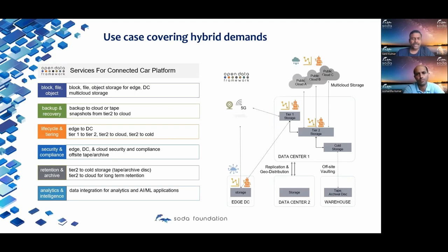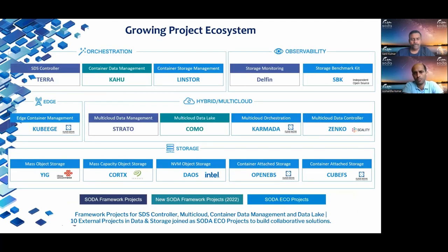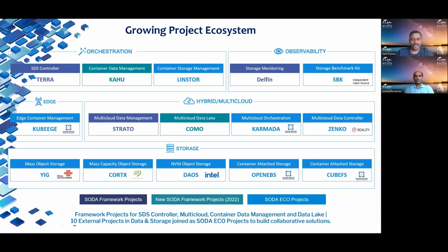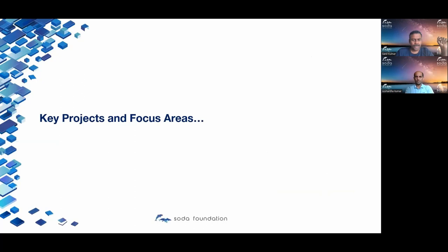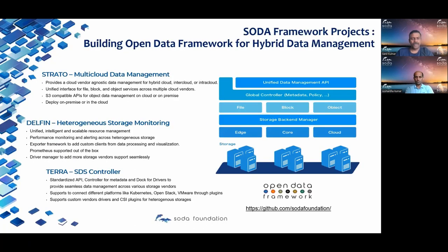We try to cover hybrid data management demands across edge, data center, and multiple clouds. Our project landscape includes framework projects like Kahu and Como, existing projects like Terra, Strato, and Delphin, and external echo projects. Key existing projects: Strato for multi-cloud data management, Delphin for heterogeneous storage monitoring, and Terra as an SDS controller for storage orchestration across Kubernetes, OpenStack, and VMware.